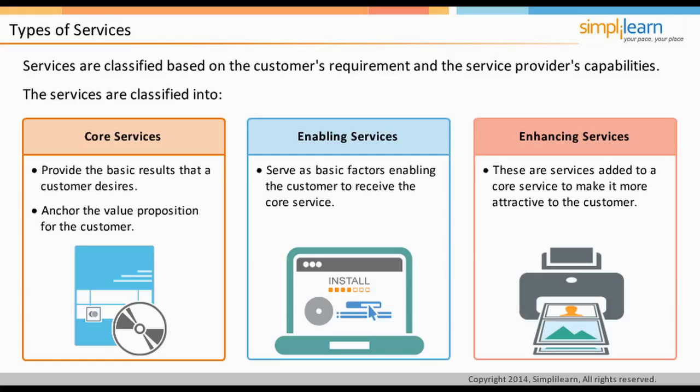Suppose a service provider's core service is to provide word processing service for users. To use the core word processing service efficiently, certain enabling services such as download and installation of updates are required. To delight the customer, a service provider can strategize to provide professional print access to publish the document.